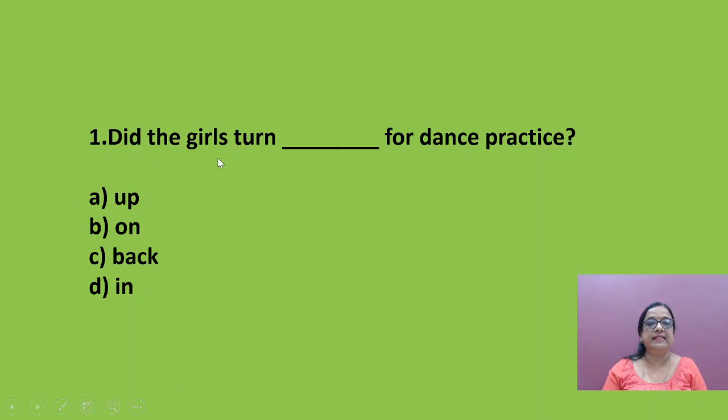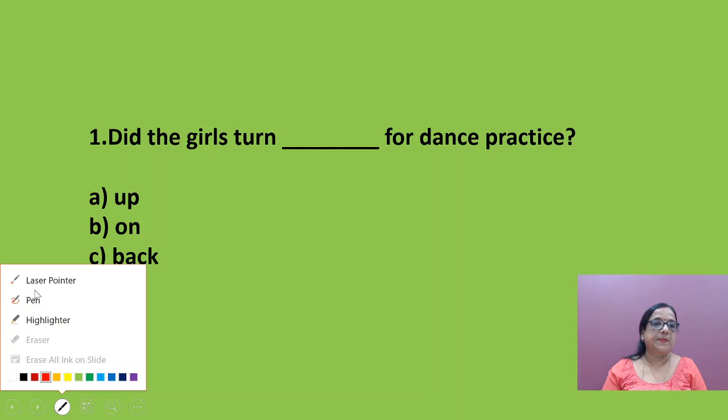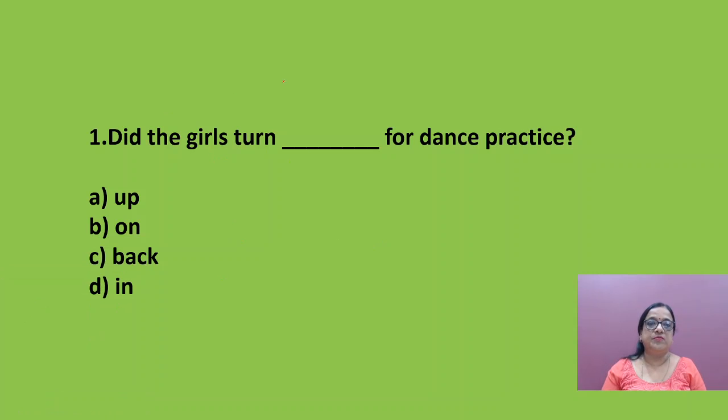The first question here is: Did the girls turn blank for dance practice? So what will you put? This is a phrasal verb, that is verb plus preposition makes a phrasal verb. So did the girls turn up for dance practice? Turn on, turn back, turn in. So here the answer will be turn up. Now the meaning of turn up is be found. That is, were the girls found for the dance practice?